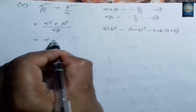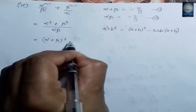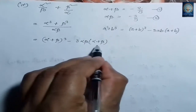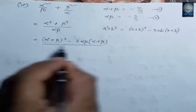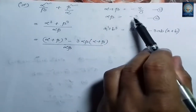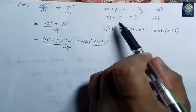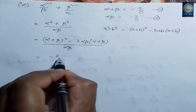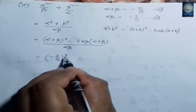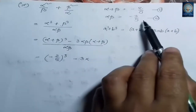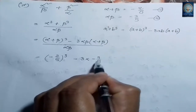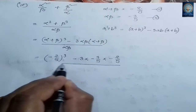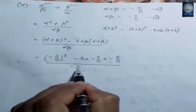Applying the formula: numerator = (alpha + beta)³ - 3·alpha·beta·(alpha + beta). Denominator = alpha·beta = -3/5. Substituting alpha + beta = -2/5 and alpha·beta = -3/5 into the numerator.